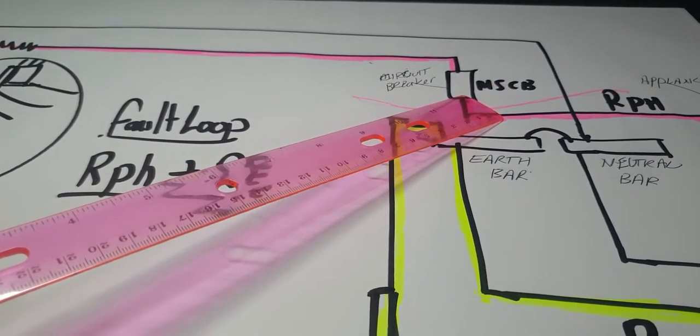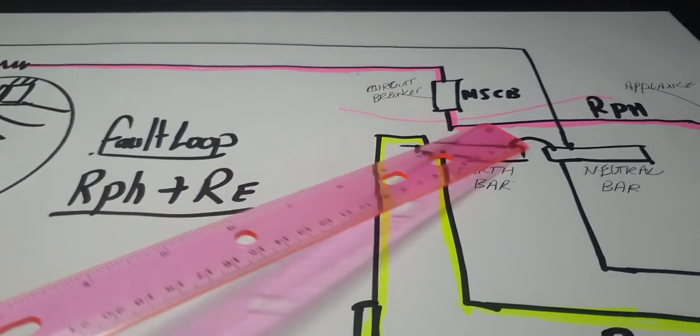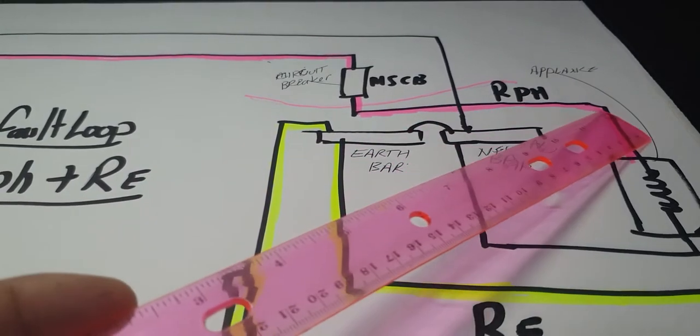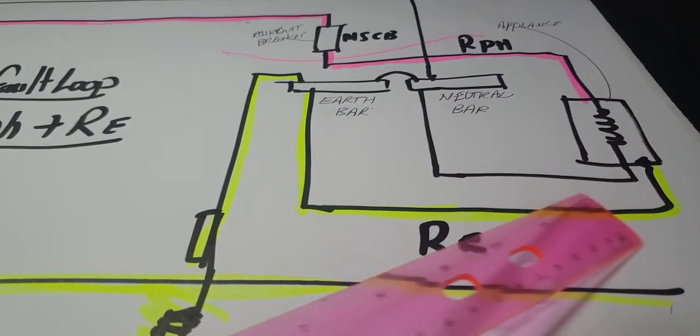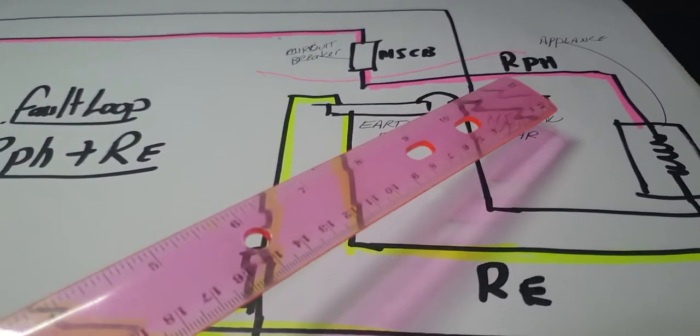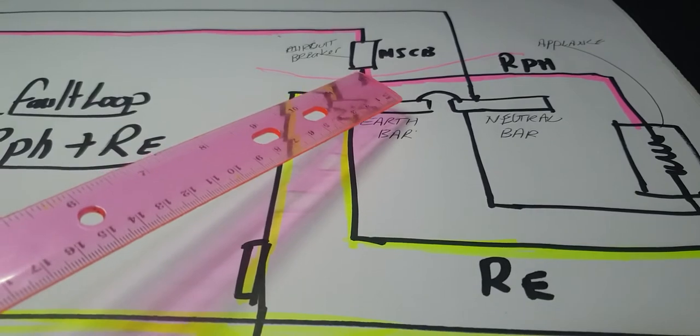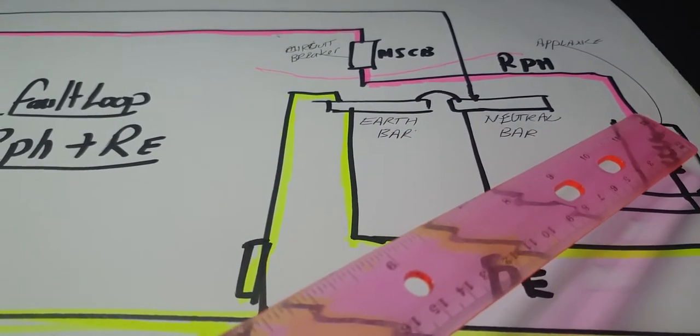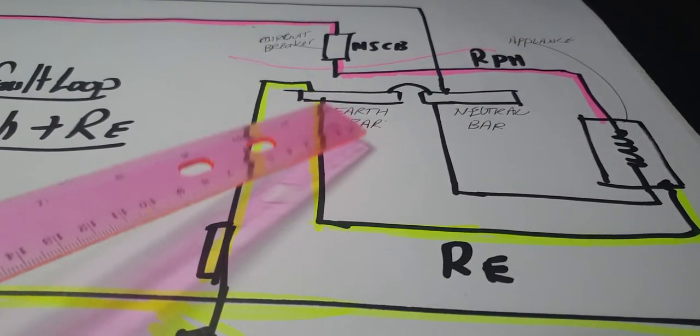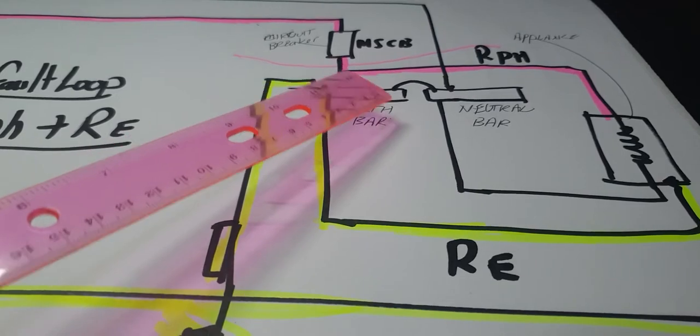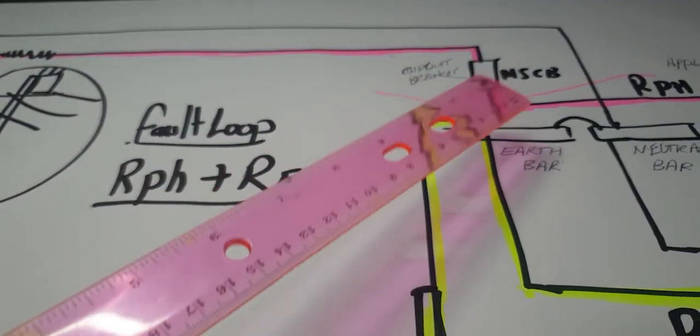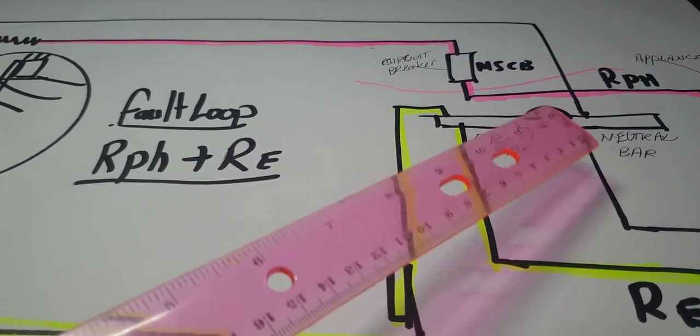Just to go back on the fault loop. When we talk about fault loop, we have the active, and then we have the earth. The definition for fault loop impedance is RPH. When we look at our graph in our book, we see RPH, which is not the red phase but the resistance of the phase and the resistance of the earth. Once we get to this point, this is so important. This wire coming into the top of the fuses out in the street is quite large.